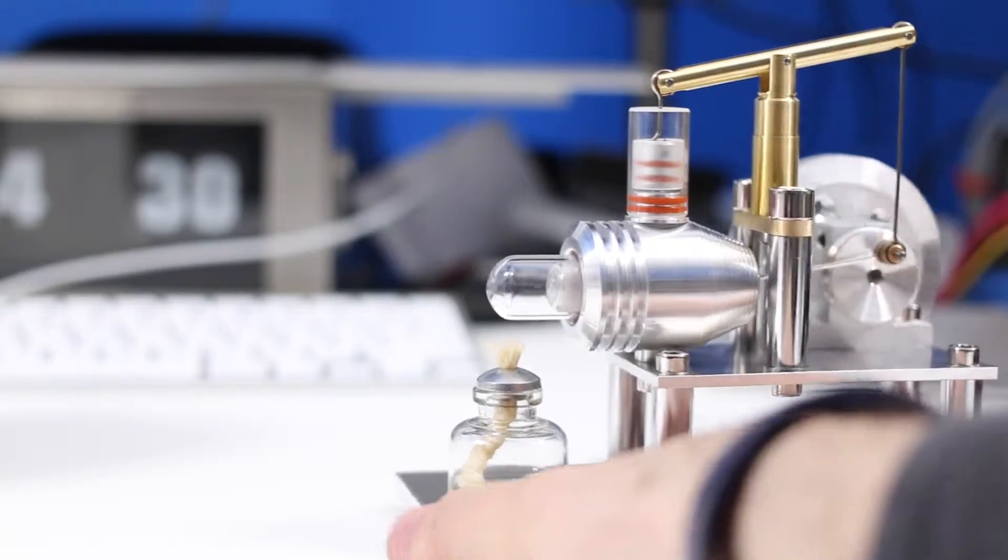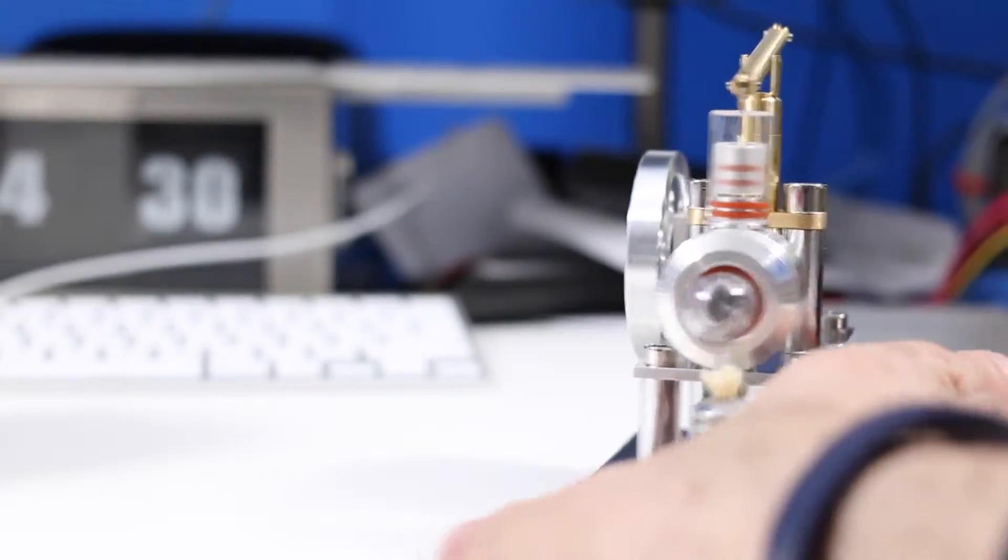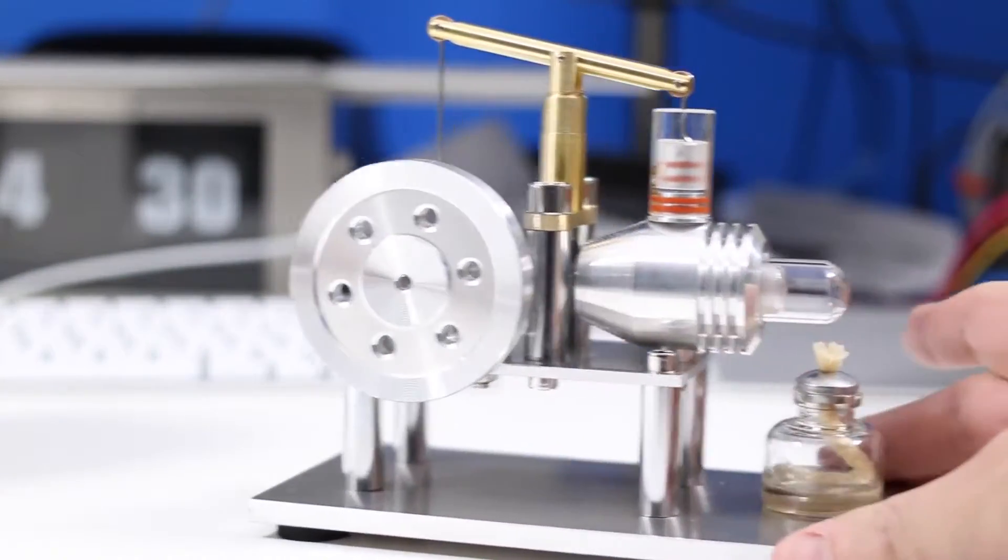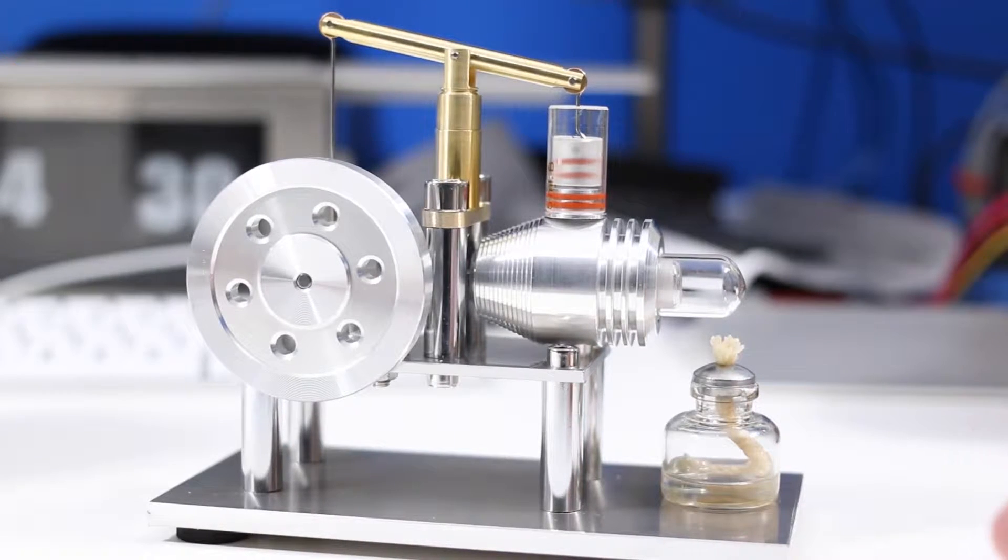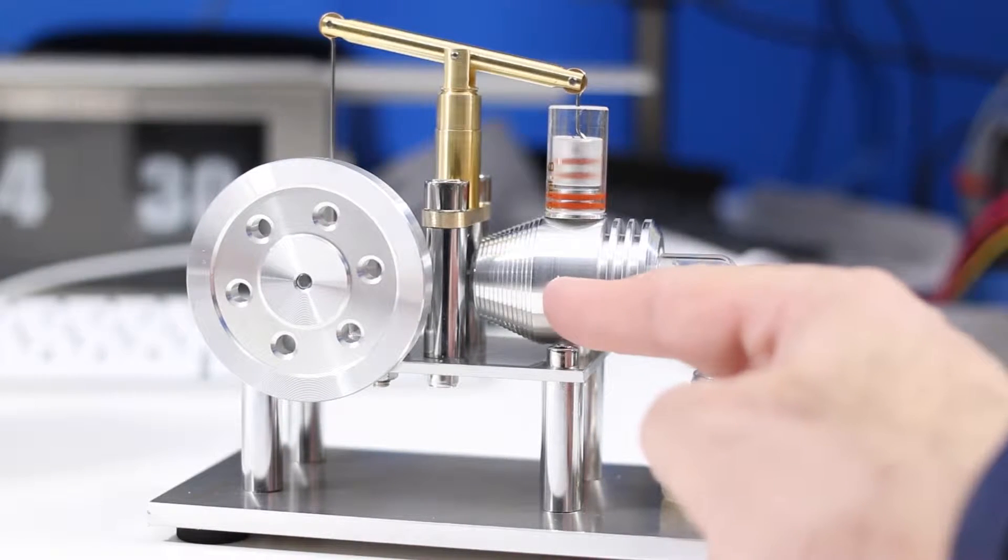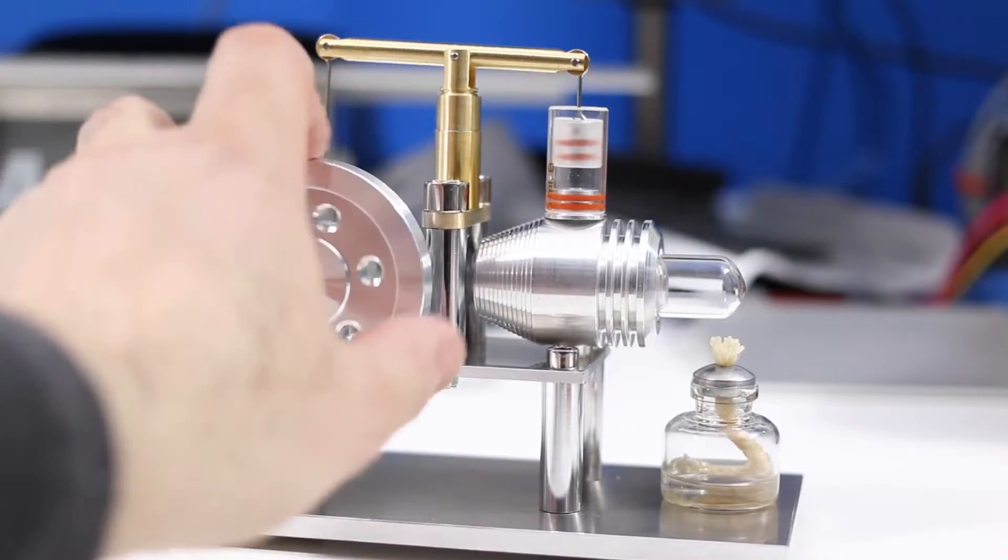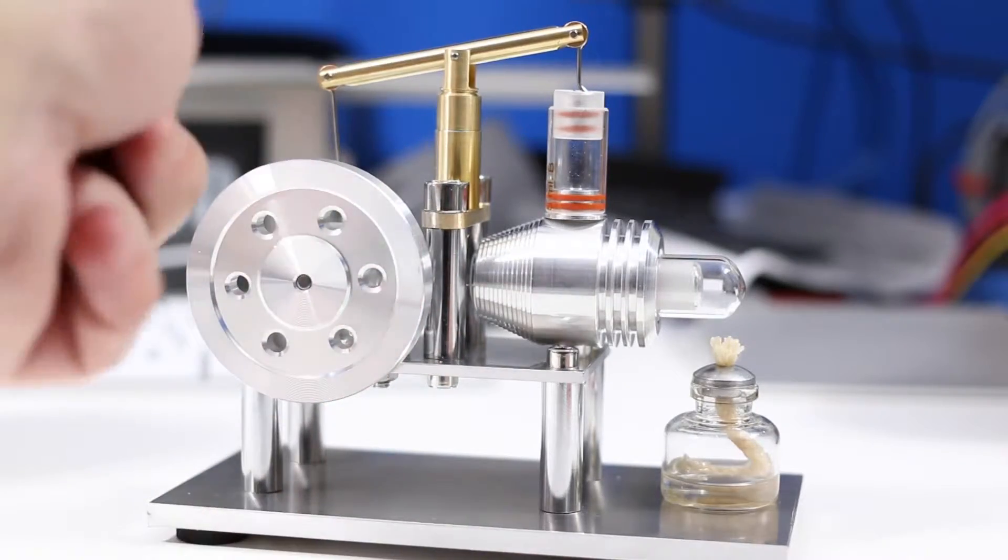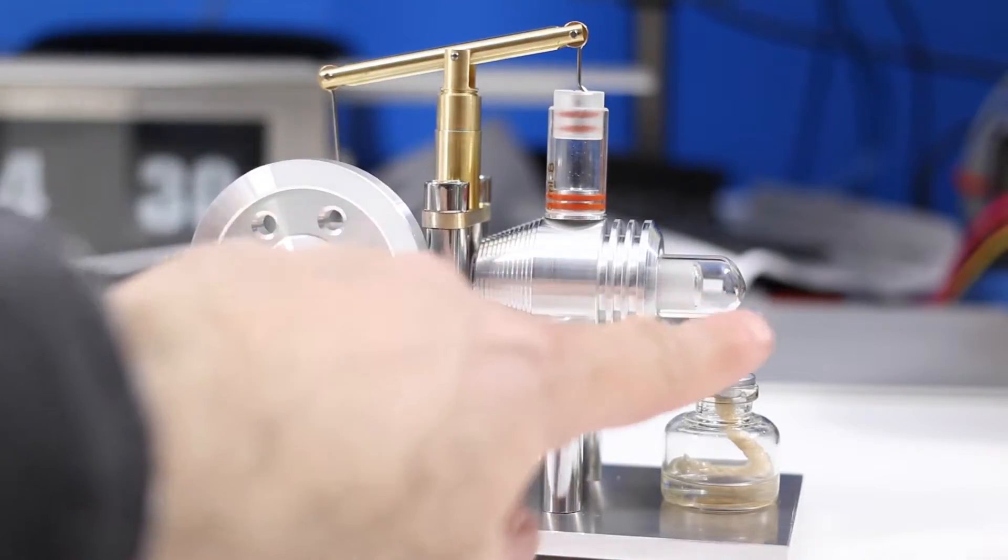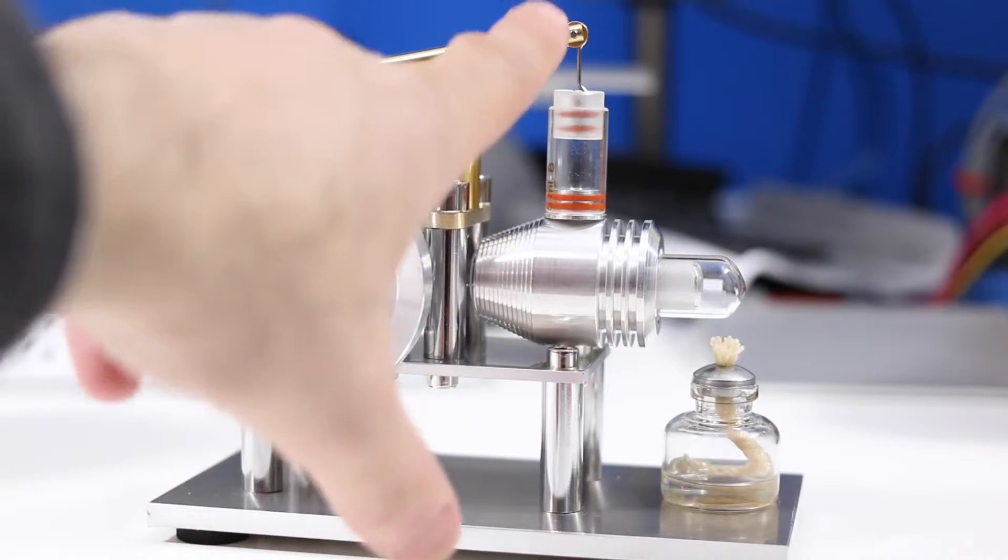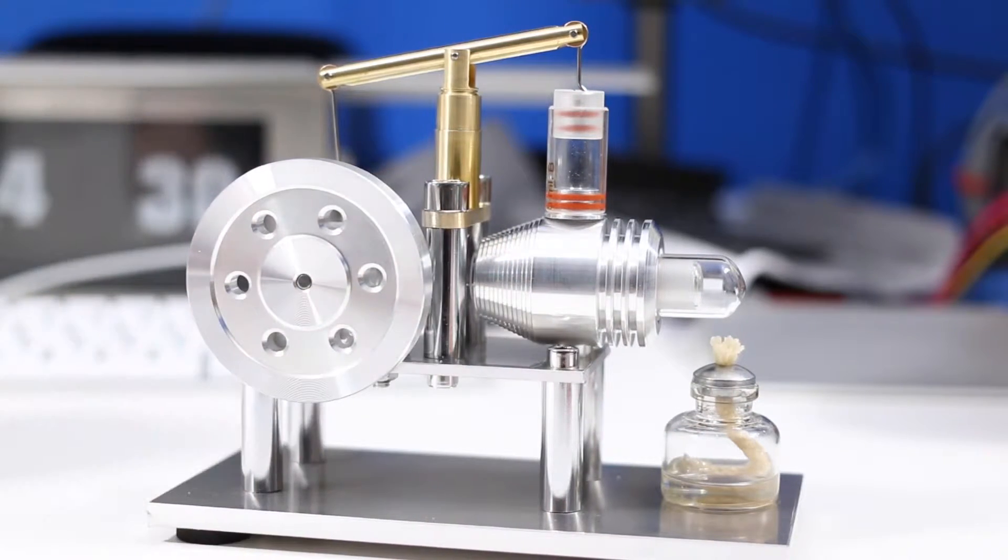The way a Sterling engine works is it has opposing sides of hot and then cold going through a cylinder. We have over here the hot cylinder and you can see there's the cold cylinder. When the flywheel pushes this back and forth, it exchanges the hot air for cold air and pushes cold air back in. That completes the cycle.